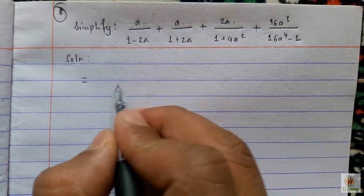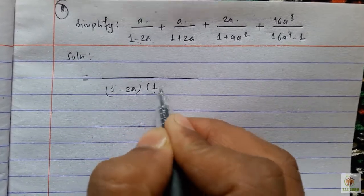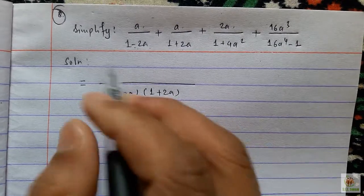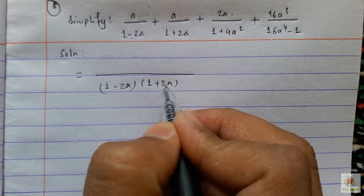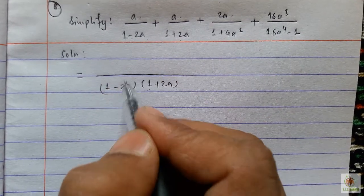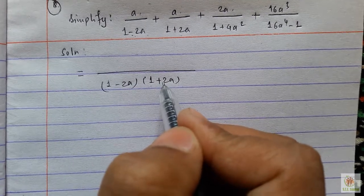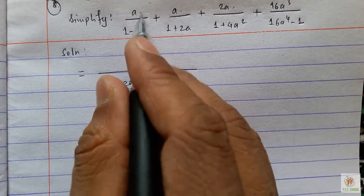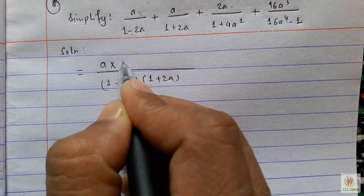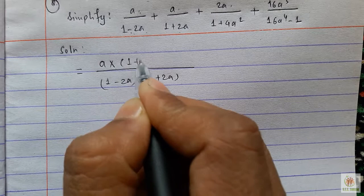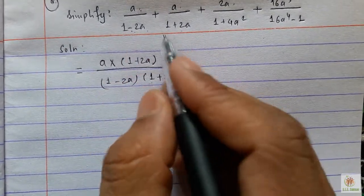Since 1 minus 2a and 1 plus 2a are different, we should take both of them. When 1 minus 2a divides the product of (1 minus 2a) and (1 plus 2a), it cancels the (1 minus 2a), and the remaining will be (1 plus 2a). So we multiply with the number in the numerator into (1 plus 2a), plus a into the same similarly.